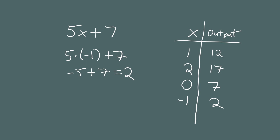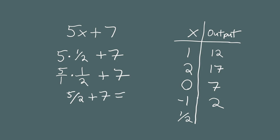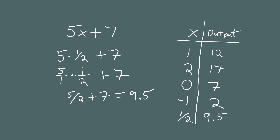We don't have to just plug in whole numbers — we can plug in fractions too. Let's input one half for x and see what we get. So we have 5 times one half plus 7. Remember 5 is the same as 5 over 1, so you multiply the tops and bottoms to get 5 halves plus 7, which equals 9.5. So when x is one half the output is 9.5. Here we see how an expression works — it's like a numeric recipe, giving you instructions on what computation to perform.